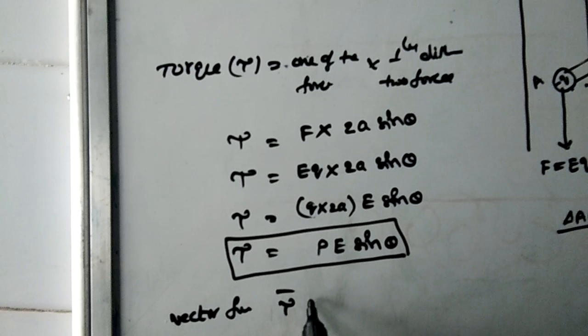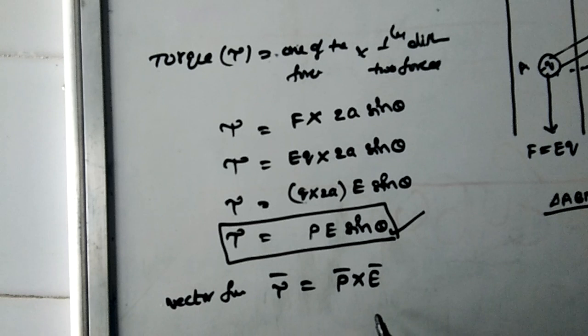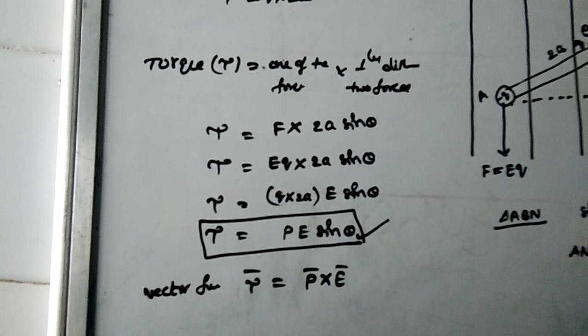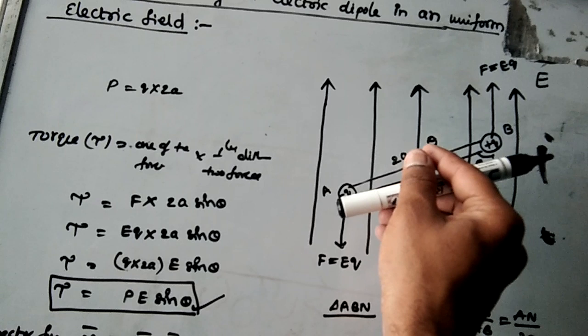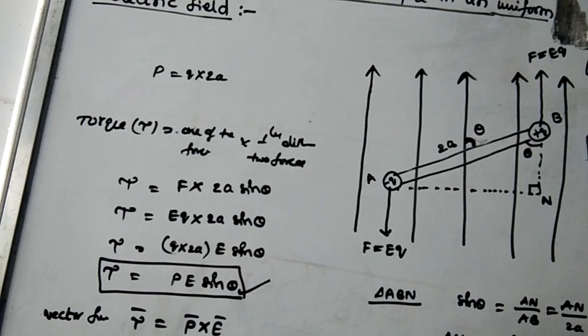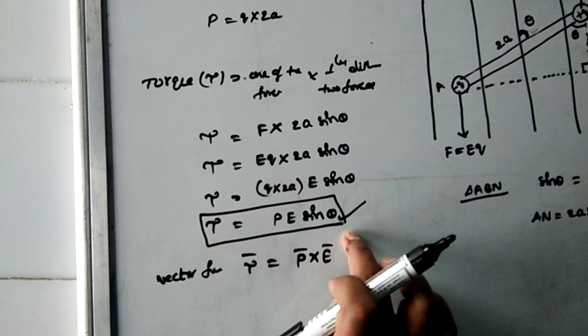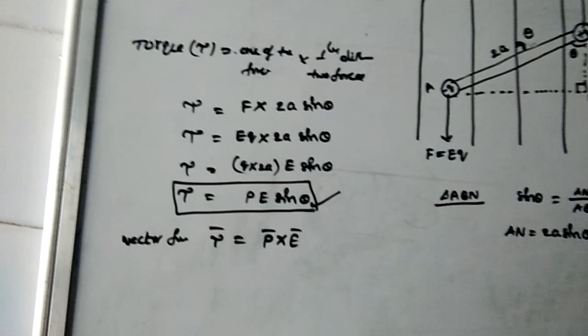In vector form, torque tau (vector) equals P (vector) cross E (vector), where theta is the angle between the dipole moment and the electric field. The two forces try to turn the dipole to align it in the direction of the electric field. Remember: theta is the angle between dipole moment P and electric field E.